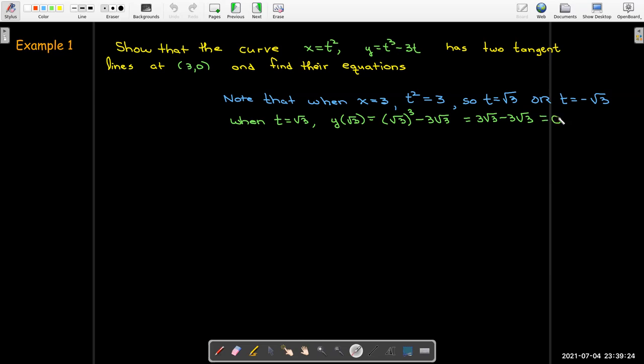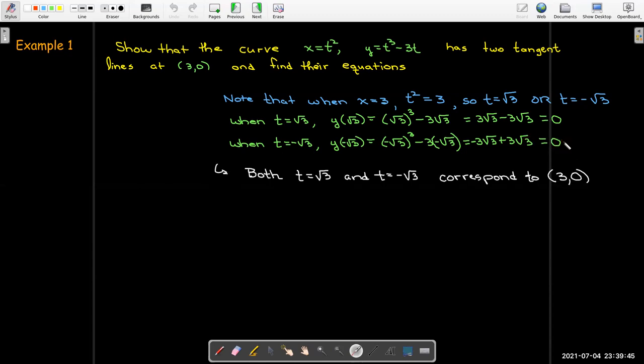What changes if I use t equals negative radical 3? Well, the sign on both terms will change. Both of these have odd exponents. So now I'm going to have negative radical 3 plus 3 radical 3, which will also give me 0. So for two different values of t, I'm going to be on the same point on the curve.